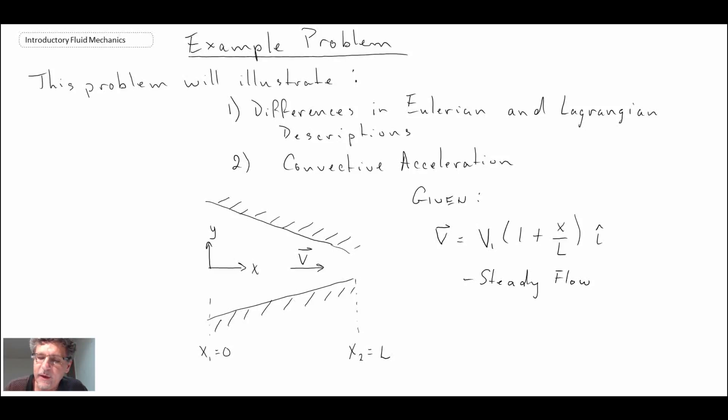The other thing that we can conclude by looking at this formulation for the velocity is that as the particles move from x₁ and as they move through to x₂, they speed up or accelerate. So the flow speeds up or accelerates towards x₂.